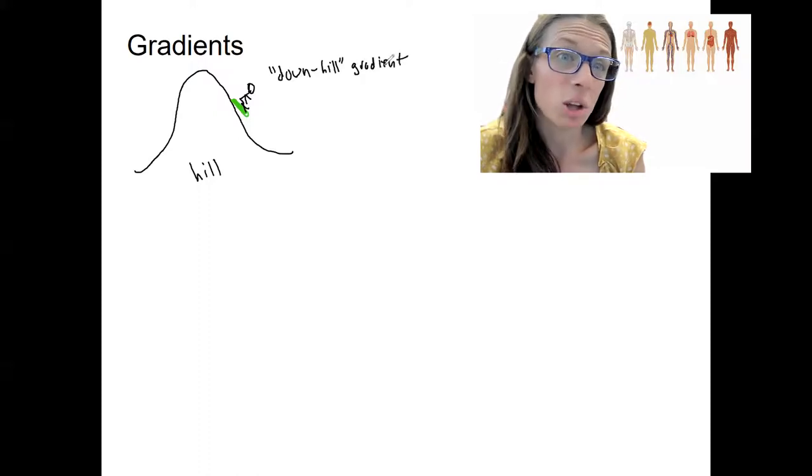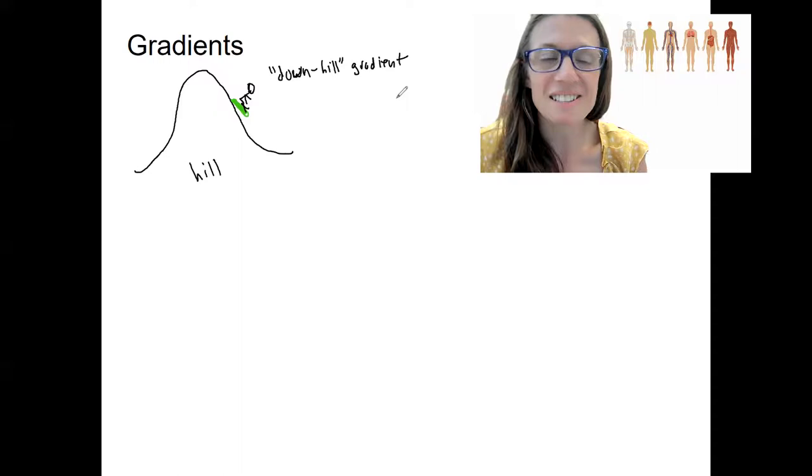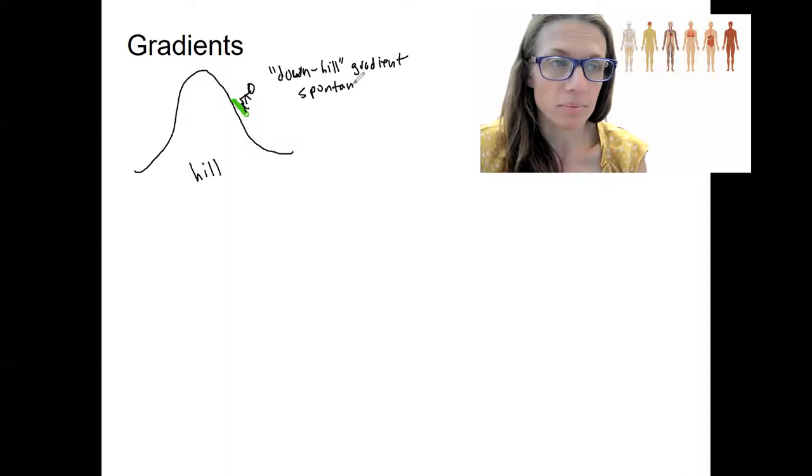They are, this is a downhill gradient. A downhill slope, right? There's a force driving them down this hill, down this gradient, and it's spontaneous, meaning no energy is required. No energy to go down the hill.